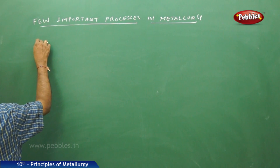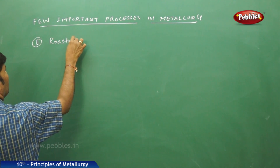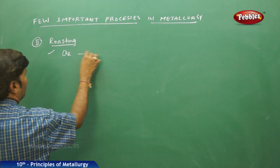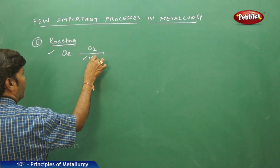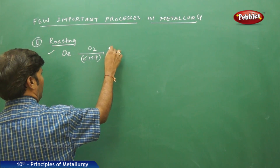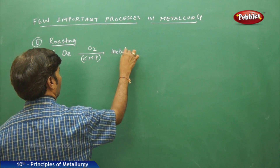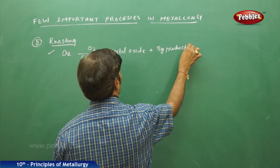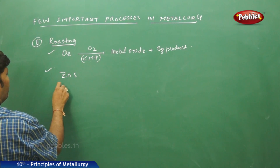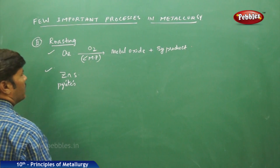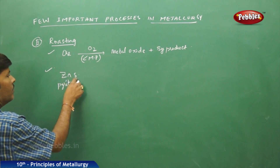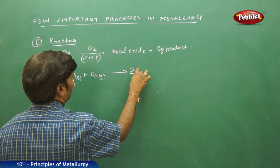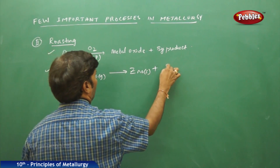The second metallurgical process is roasting. Roasting is the heating of a mineral ore in the presence of oxygen below its melting point to give a metal oxide and a byproduct. All pyrite mineral ores are subjected to roasting. For example, zinc sulphide (zinc pyrites) reacts with oxygen gas: 2ZnS(s) + 3O₂(g) → 2ZnO(s) + 2SO₂(g).